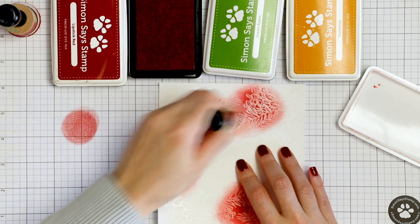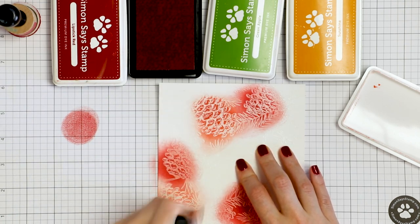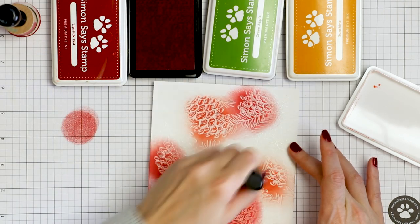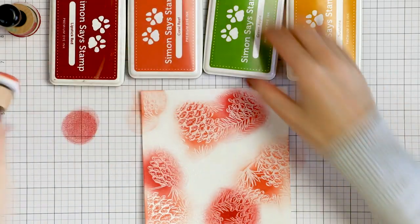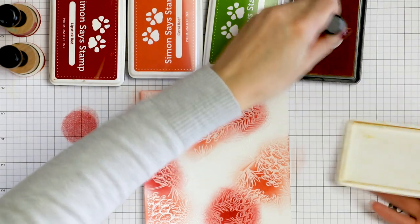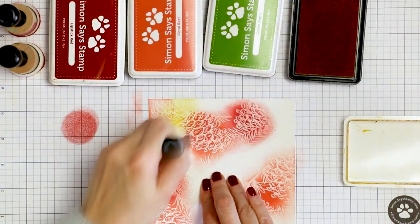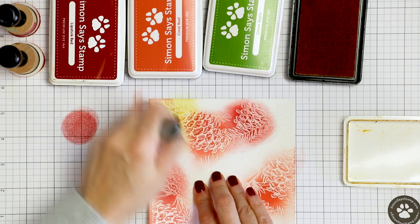I picked 4 colors of ink for my ink blending and I tried to go with a fall color combination. I have red lipstick, coral reef, green apple and sunshine. So I have red, plenty of orange, just a little bit of green and some yellow to complete the mix.